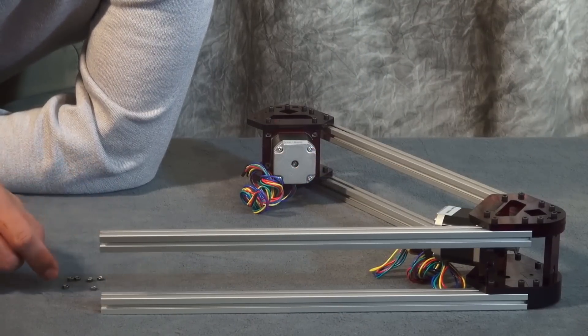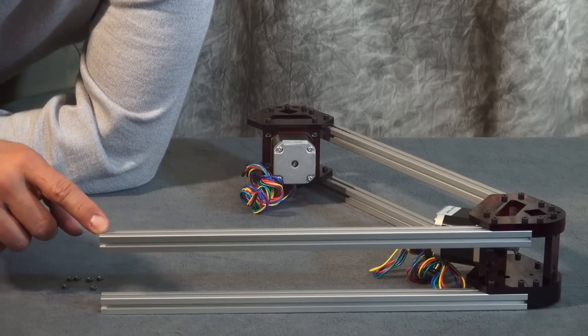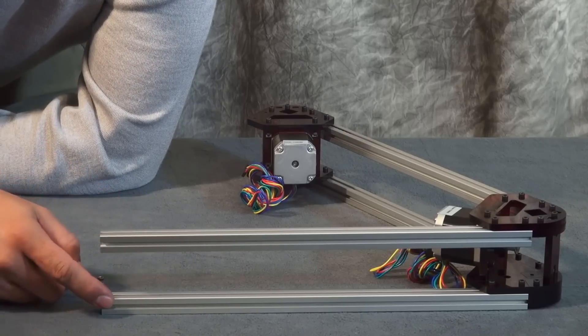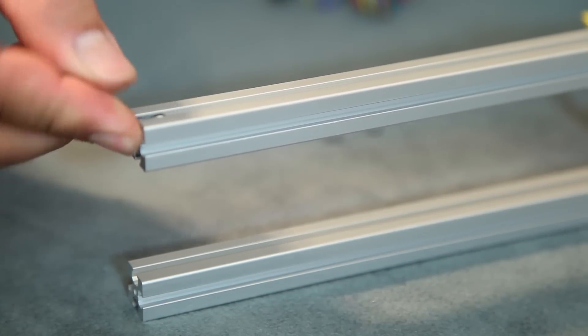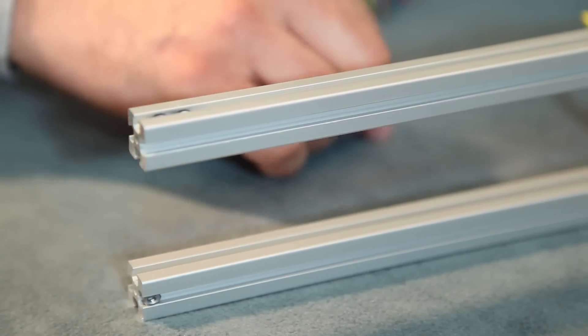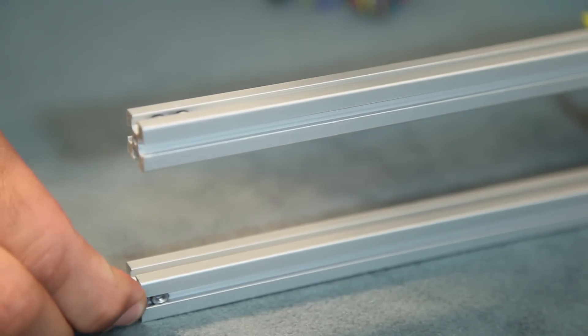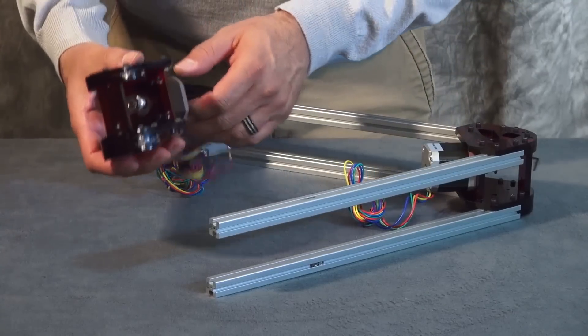On the top of bar one, we're going to put four nuts. And on the front of bar two, we're going to put two nuts. Now we can attach our third motor assembly.